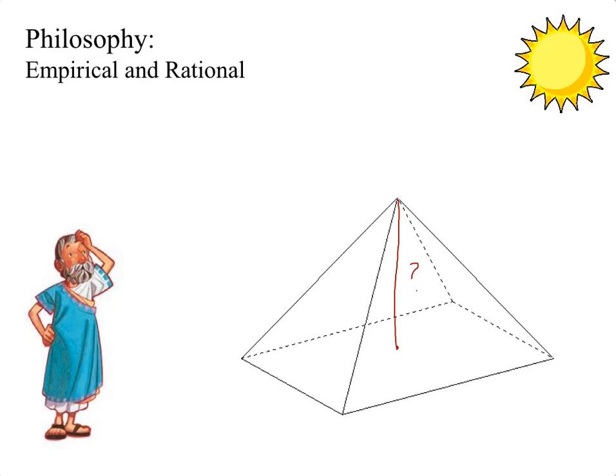Now, the height of a pyramid is different than the length of the side of the pyramid. So let's look at this model of natural philosophy and empirical knowledge and rational knowledge to see how he figured this out.